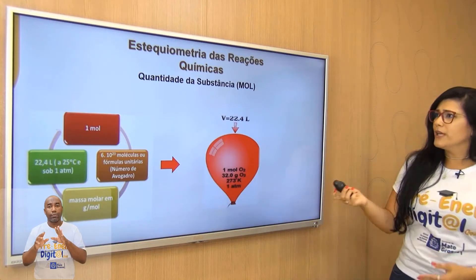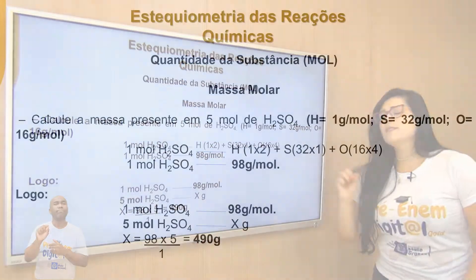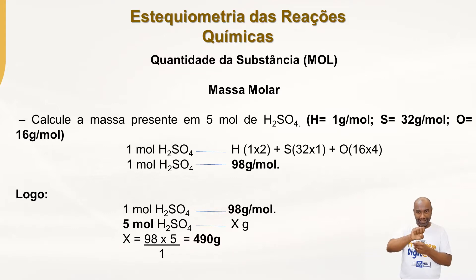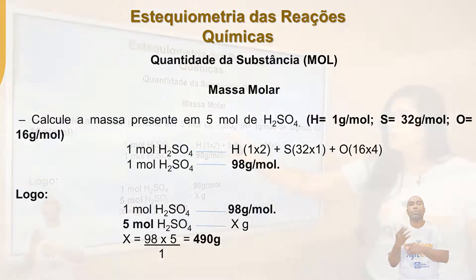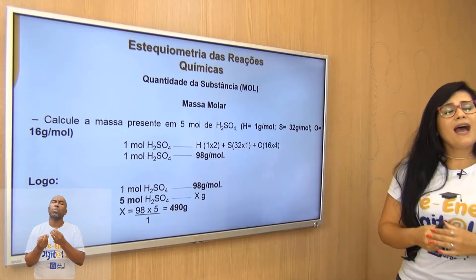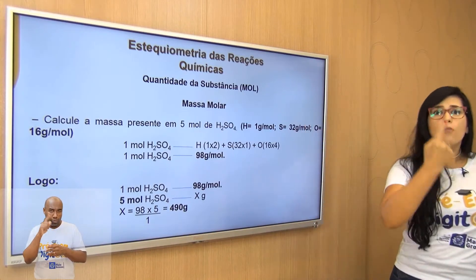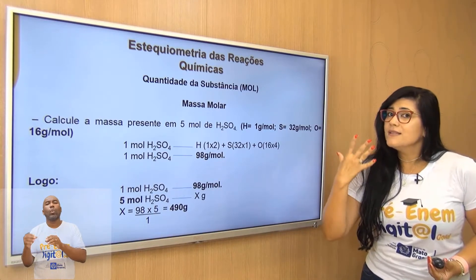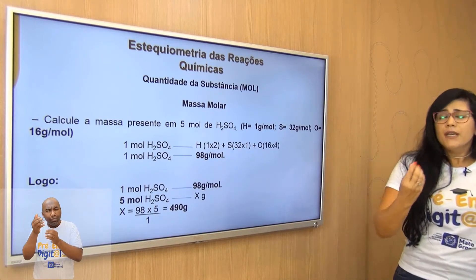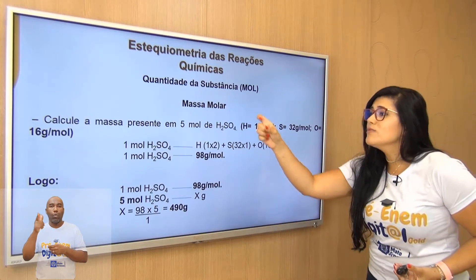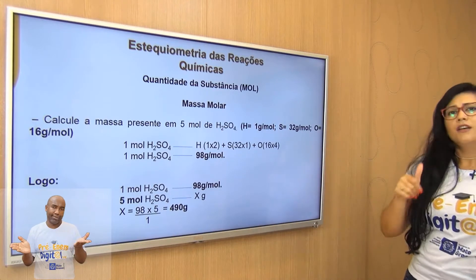Isso é importantíssimo. Veja esse exercício: calcule a massa presente em 5 mols de ácido sulfúrico, H₂SO₄. Se eu souber a massa molar do ácido sulfúrico — a massa em 1 mol — eu consigo dizer qual é a massa em 5 mols. Porque na hora de responder uma questão do Enem, se eu não sei fazer essa relação, eu já perdi metade da questão.